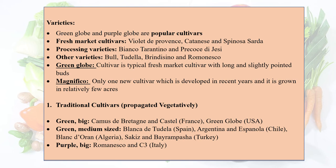Green Globe is typically a fresh market cultivar with long and slightly pointed buds. Magnifico is a new cultivar developed in recent years, grown in relatively few acres. Traditional cultivars are propagated vegetatively; green and big varieties include Camus, Deep Britannin, and Castel from France.